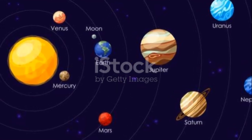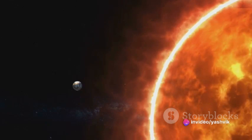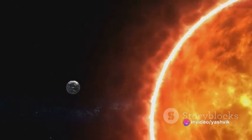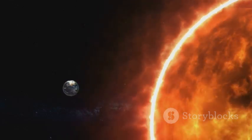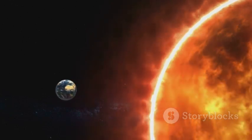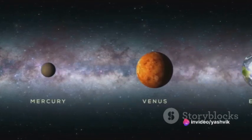To begin, imagine a scale where the sun is the size of a standard basketball, about 9.5 inches in diameter. Now, picture the Earth as a tiny peppercorn, approximately 100 feet away from our basketball-sized sun. This is the scale of our solar system. But where does the rest of our solar system fit on this scale?